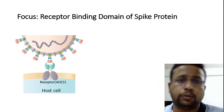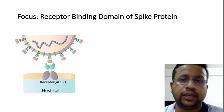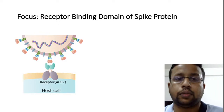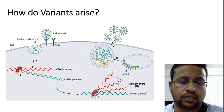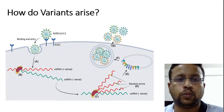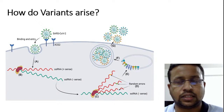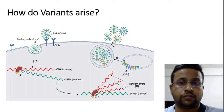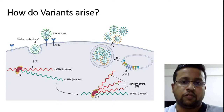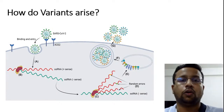The focus will be on the receptor binding domain of the spike protein. Whenever a variant comes, the main changes occurring will be in the spike protein RBD — mutations in the receptor binding domain are what we are mainly concerned about. How do variants arise? SARS-CoV-2 enters human cells by binding to the ACE2 receptor; once inside, the virus undergoes replication, and the replication machinery is not foolproof — errors occur which we call mutations.